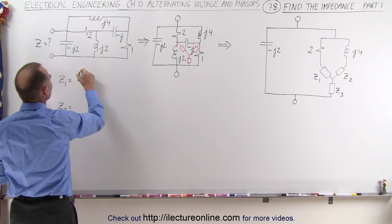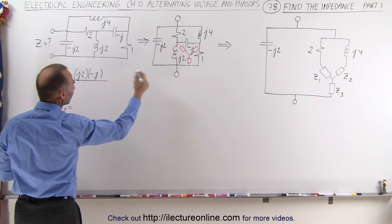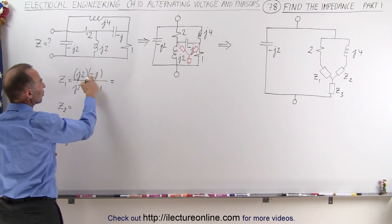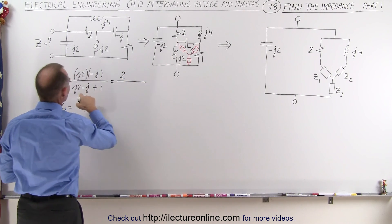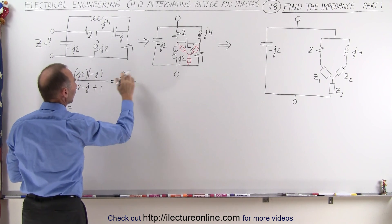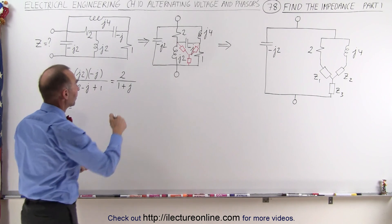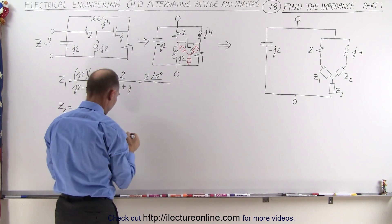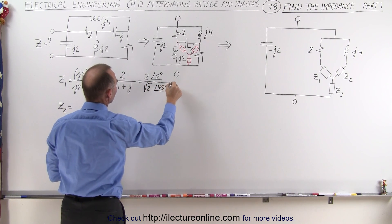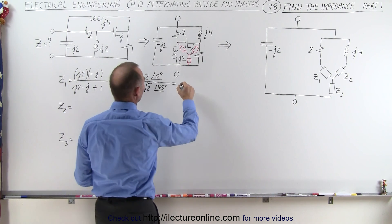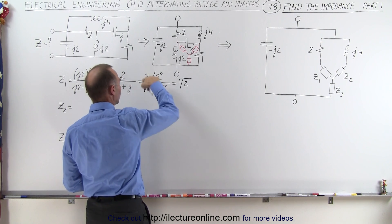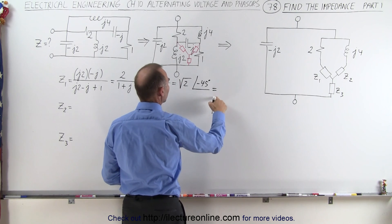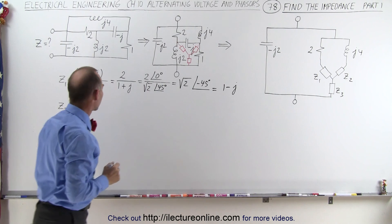z1 is equal to the product of those two components divided by the sum of all three. The product would be j2 multiplied times minus j, divided by the sum j2 minus j plus 1. When we multiply these two together we get minus 2j squared; j squared is minus 1, giving us positive 2. In the denominator we get 1 plus j. Converting to magnitude and phase: 2 at 0 degrees divided by square root of 2 at 45 degrees equals square root of 2 at minus 45 degrees, which as a real and imaginary part gives us 1 minus j. That gives us z1.